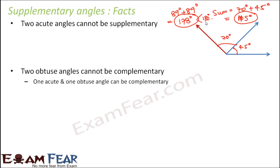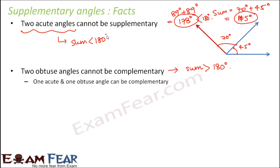Two obtuse angles cannot be supplementary either. That's because each obtuse angle is greater than 90 degrees, so when you add two obtuse angles, the sum becomes greater than 180 degrees. With two acute angles, the sum is less than 180 degrees. Because of these, neither two acute angles nor two obtuse angles can be supplementary.